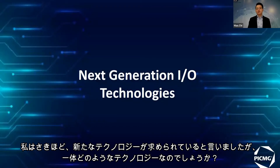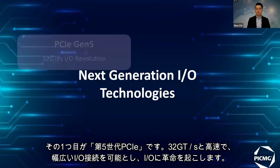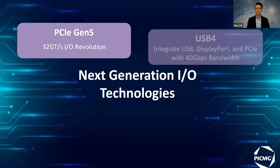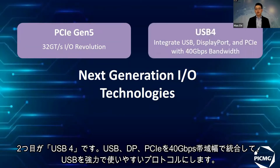New technologies are coming. First, PCI Express Gen 5: it brings 32 GT per second high speed and makes I/O revolution to provide more possible usage. Then, USB 4: it integrates USB, DisplayPort, and PCI Express signals all together with 40 Gb per second bandwidth, making USB a powerful but easy-to-use protocol.